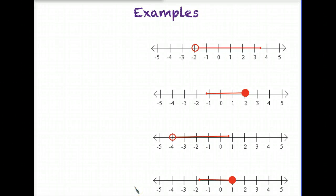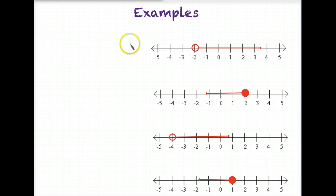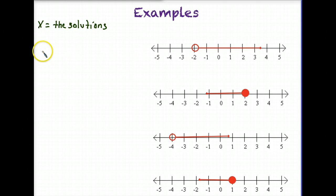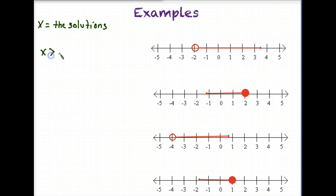Let's practice writing inequalities. In this first example, we have an open circle, so we do not include that number as part of our solution — negative 2 is not a solution. All solutions are going to be greater than negative 2. Using x to represent our solutions, I'll keep the variable on the left. All solutions are to the right of negative 2, so they are all greater than negative 2.